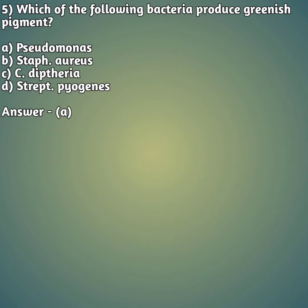Moving on to our fifth question: which of the following bacteria produce green pigment? Option A: Pseudomonas, option B: Staph aureus, option C: C. diphtheriae, option D: Strept. pyogenes. The right answer is option A — Pseudomonas produces the greenish pigment.